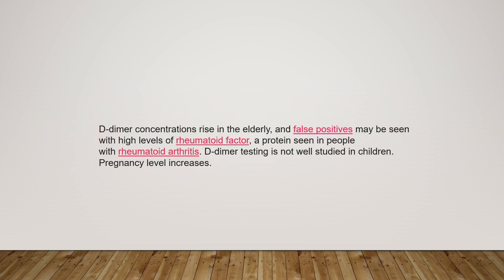D-dimer concentrations are usually slightly higher in elderly individuals. In patients with rheumatoid arthritis, D-dimer may come falsely positive and levels may be slightly elevated. Pregnancy also usually increases D-dimer levels — in the third trimester, values normally exceed 1, so you need to correlate the values accordingly in pregnancy, and always discuss with your gynecologist. Overall, D-dimer is a sensitive test but not a specific test.